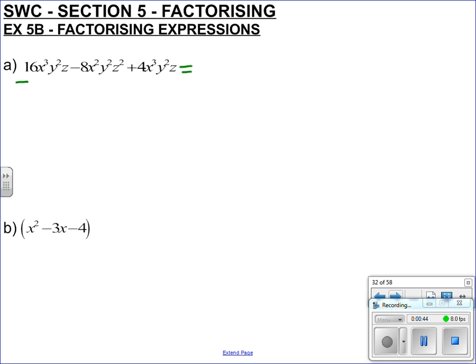Let's deal with the numbers first. We've got 16, 8, and 4. Remember, we're trying to put stuff into brackets — we're trying to find what's common about them and then stick the rest into a bracket, so that when you multiply it out you get what you started with. They don't all have a 16 or an 8, but they do all have a 4 — 8 and 16 are multiples of 4.